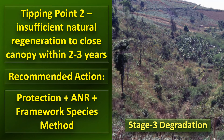Tipping point two is reached when the amount of natural regeneration on the site slips below the critical threshold value required to close canopy within about two to three years. In northern Thailand, this is about 3,000 stems per hectare. Under this circumstance, you still have to protect the remaining natural regeneration and maybe assist it with ANR, but you also have to plant trees to increase the stocking from the amount already on site to the amount required to close canopy in two to three years.